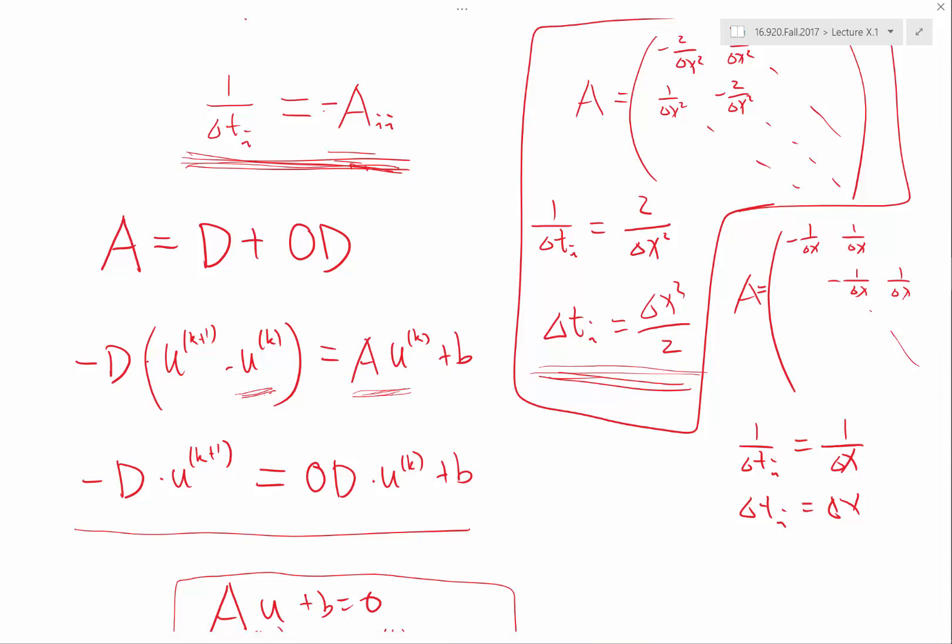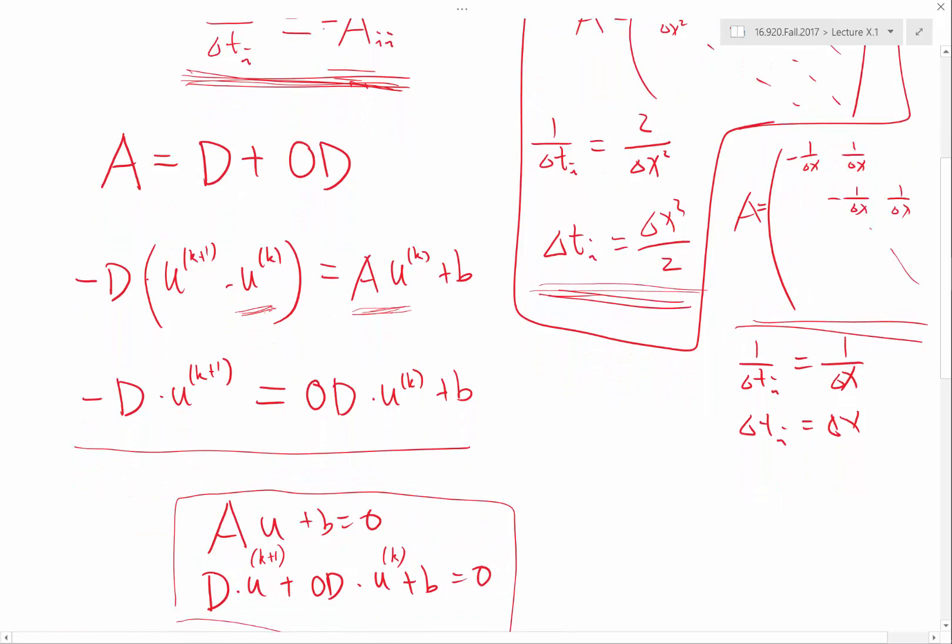Sometimes it doesn't make sense. For example, if you discretize a first order derivative using central difference, what will be the diagonal? Zero, right? So in that case, does it actually make sense to use Jacobi iteration? No, right? You get a huge time step that is for sure going to be unstable. So in that case, you may want to modify Jacobi iteration a little bit so that your delta t actually does correspond to what you would be using for CFL condition, right? So I think it's a lot more useful to think it in this way.